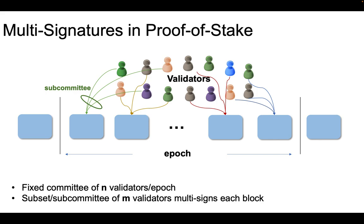Let me take some time to explain the setting in more detail. In proof-of-stake, time is divided into epochs, and in every epoch there is a fixed committee of n validators. Every block proposed within this epoch will be signed by a subset — a subcommittee — of this initial validator committee. For every single block proposed, this subcommittee will need to compute a multisignature on the block. Our goal was to optimize the BLS multisignature for this particular scenario: a fixed set of possible signers, with subsets signing messages each time.